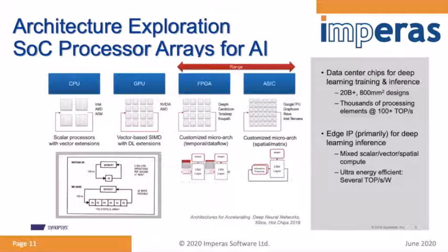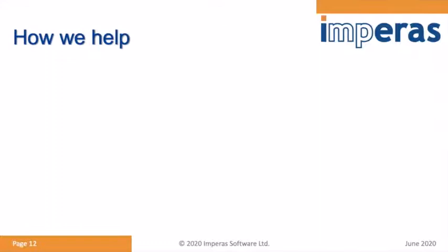Looking across architecture exploration for SoCs, there's an array of processor options. This slide from Xilinx, also adopted by Synopsys, illustrates architectural choices: from single-core and quad-core scalar processors with vector extensions, to dedicated SIMD hardware, to customized instructions, and finally to fine-tuning interconnects and communications between many-core arrays.